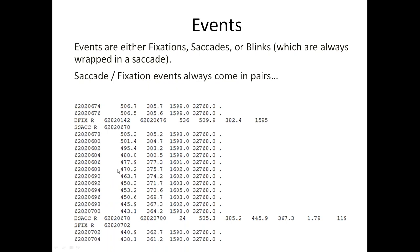Events always come in pairs — here an end-fixation followed by a start-saccade, and an end-saccade followed by a start-fixation. That's because the EyeLink host software uses a saccade-detecting approach: it uses velocity and acceleration criteria to determine when the eye is in a saccade. At a high sampling rate, within two or three samples the velocity of the eye will go above about 30 degrees per second, signaling saccade onset.